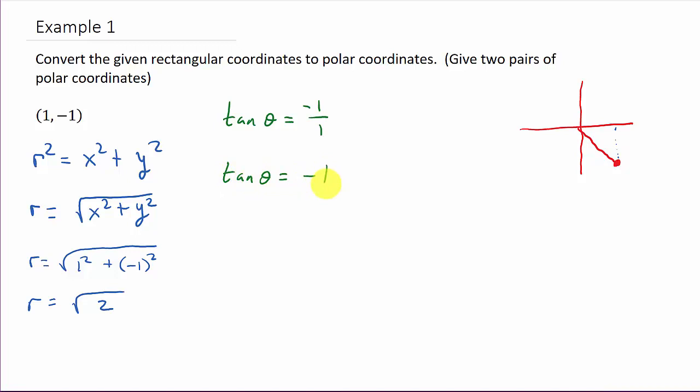Alright, so if we look to find theta, there's theta. We can see that it's an angle in the fourth quadrant. Now, what I want to do is I'm going to find two different pairs of polar coordinates as you can see in the title here. I'm going to find a solution.